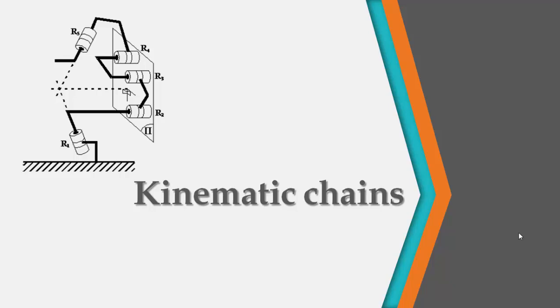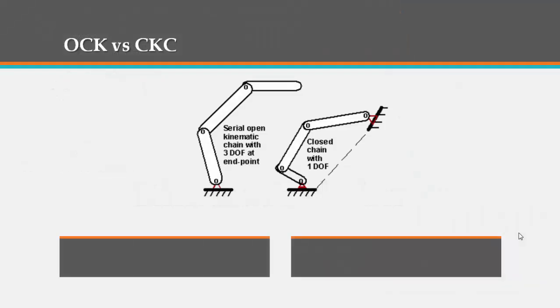To begin with, recall that a serial kinematic chain consists of a series of links in a common arrangement, for example, a robot arm. And basically, we distinguish between two classes of kinematic chains.